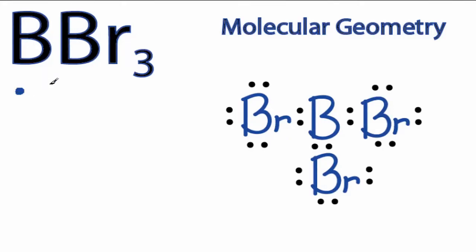To find the molecular geometry for BBr3, we'll look at the Lewis structure. Note that in this Lewis structure, boron only has six valence electrons. And that's okay - boron needs six for a full outer shell, so this is the correct structure.